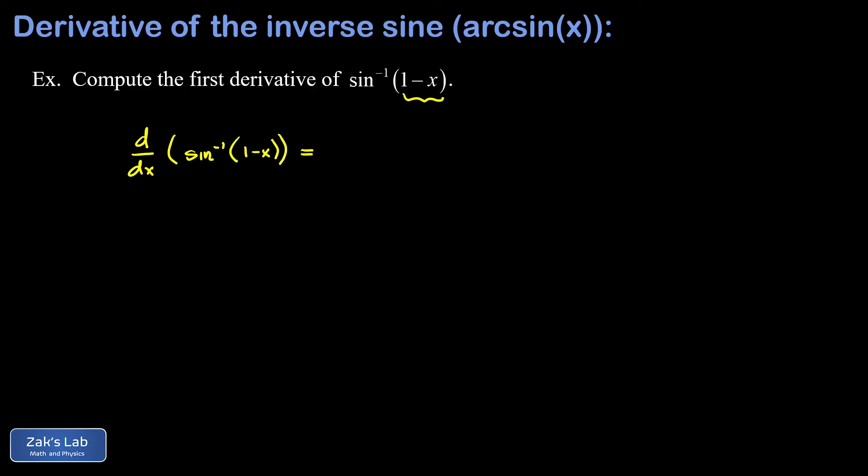We need to apply the chain rule to this thing. The first thing that I do is just differentiate the inverse sine of 1 minus x with respect to 1 minus x. In other words, we treat the argument of this function like a single variable. So we follow the formula we just derived: all I need is 1 over the square root of 1 minus that argument squared. But the chain rule says we now have to tack on the derivative of that argument.